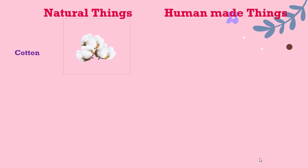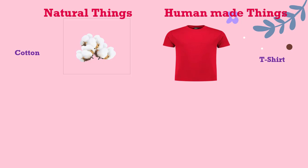Now let us see. This is the cotton that we get from the farms. This cotton is a natural thing — it comes from a plant, we have not created it. But from this cotton, we are making a t-shirt. So the t-shirt is a human made thing. We take the cotton to a cotton industry, manufacture it, and then we get a t-shirt. So from a natural thing, a human made thing is made by human beings.